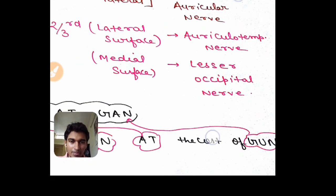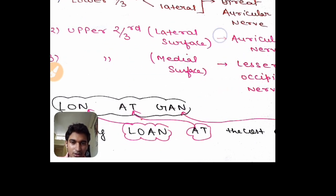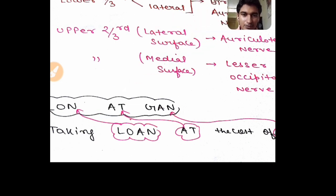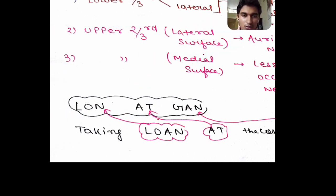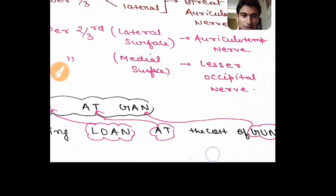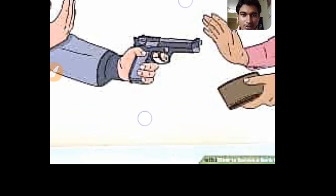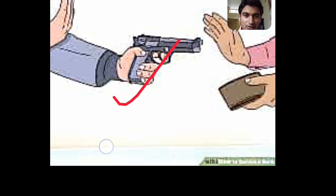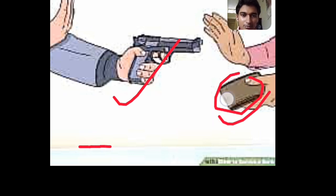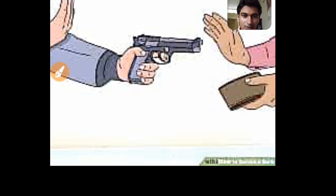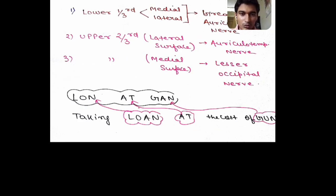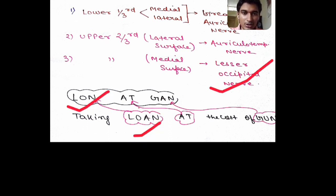Now coming to the mnemonics for this whole nerve supply: 'taking LOAN at the cost of GUN.' We use a diagram showing one person carrying a gun to a bank person and taking a loan from him. LOAN means Lesser Occipital nerve, AT means Auriculotemporal nerve, and GUN means Greater auricular nerve.